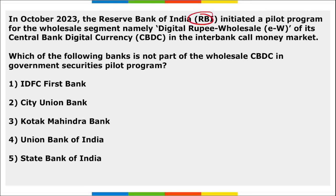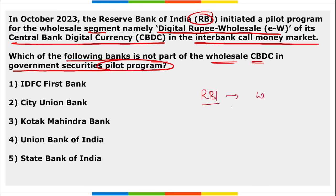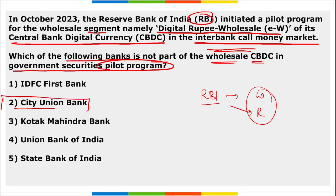RBI initiated a pilot program for the wholesale segment of digital rupee (CBDC) in the interbank call money market. City Union Bank is not part of the wholesale CBDC government securities pilot program. The e-rupee call money pilot is the second test of wholesale CBDC after the government securities market in November 2022.